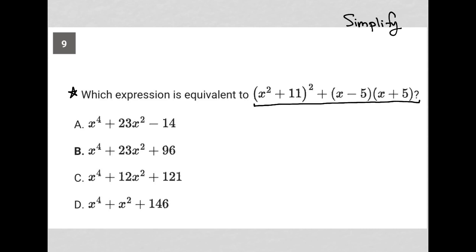The simplest way to go about this, or one of the simplest ways to go about this, is to simplify each portion here. So I'm looking at this x squared plus 11 to the second power as separate from this x minus 5 times x plus 5.